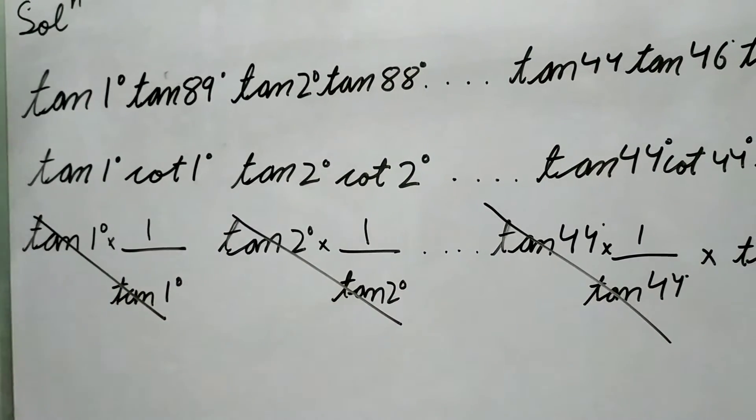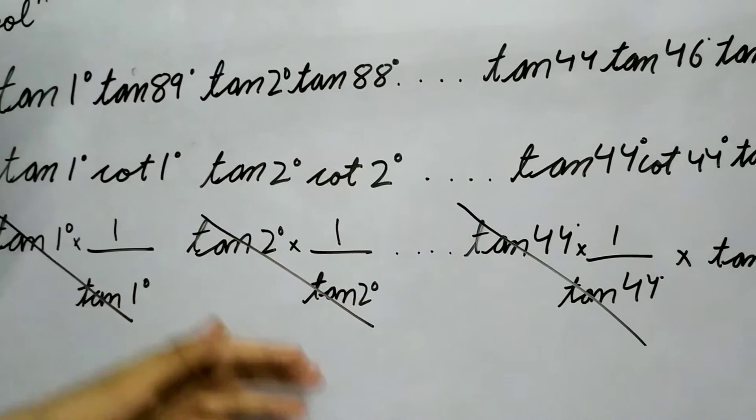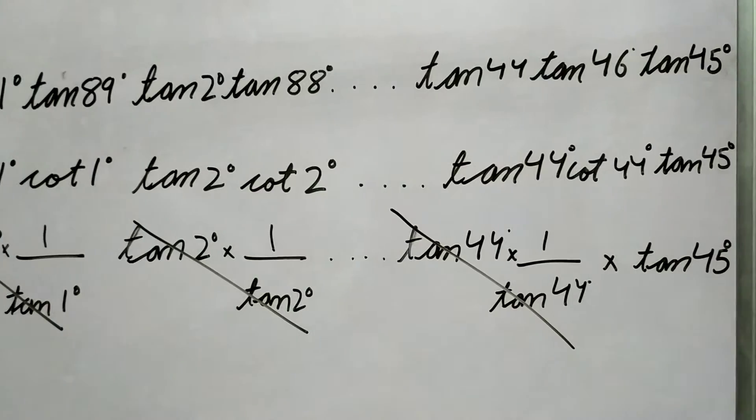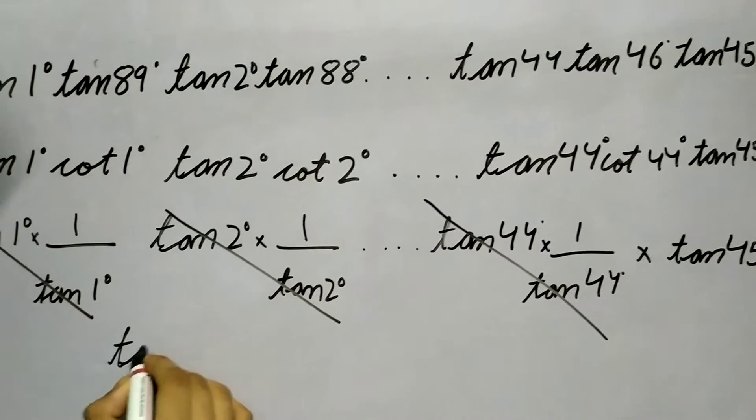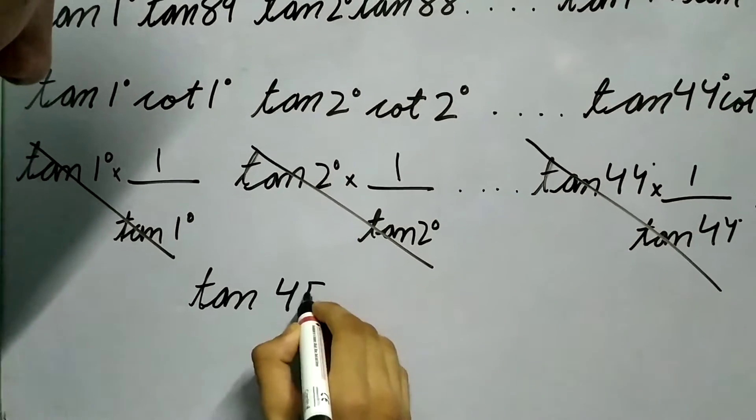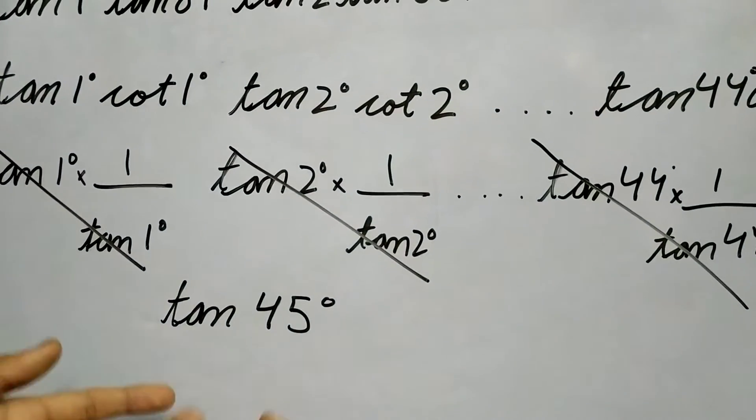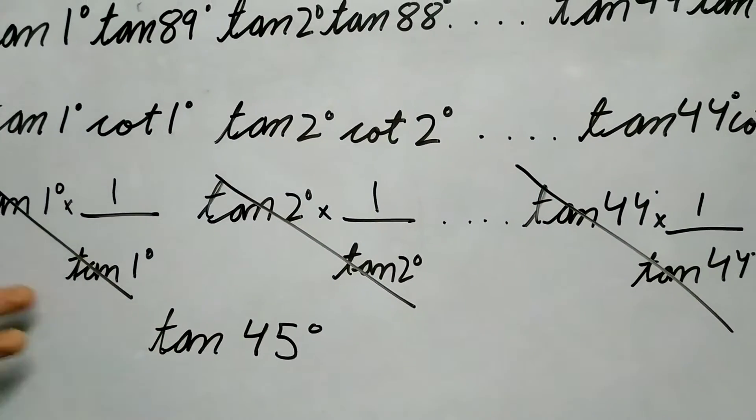And then we notice that these things beautifully cancel out. So we might have other terms like tan 37°/tan 37° - they will cancel out. So everything will cancel out and then we will be left with tan 45°.